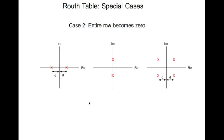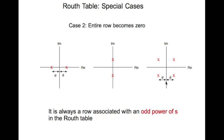The second case is an entire row becomes 0. Now there are particular situations when this happens. The first situation is when you have two real roots equidistant from the imaginary axis. The second case is when there is a complex pair on the imaginary axis. So this is a marginally stable system. And the third case is two complex pairs equidistant from the imaginary axis. Now this entire row becomes 0 always at an odd power of s in the Routh table.